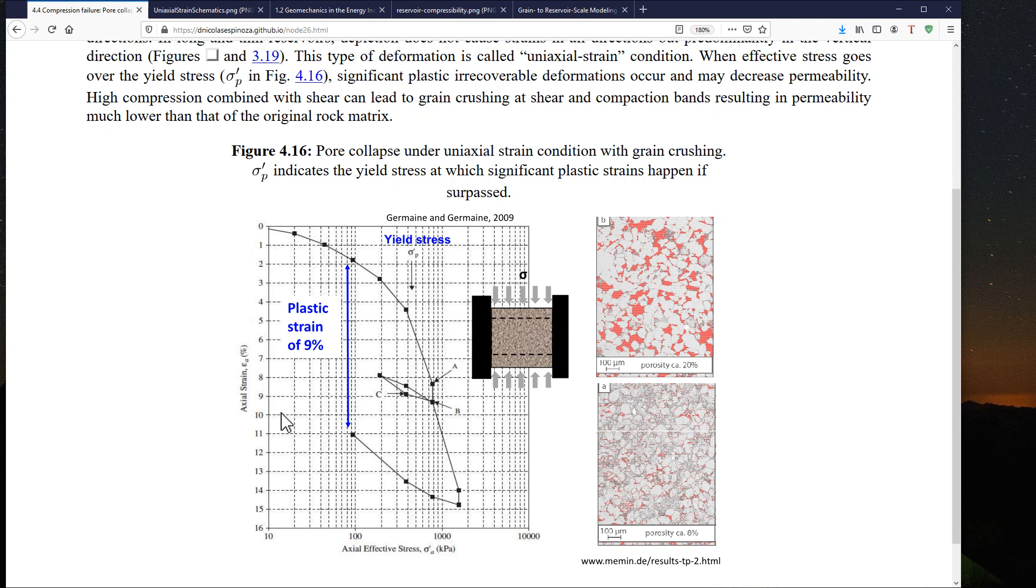Here we have an example of axial strain and axial stress. We can see that as we increase the axial stress, axial strain is going to increase. At some point if I increase the axial stress too much, I'm going to go into inelastic deformations caused by the crushing of the grains that results in a significant decrease in porosity, see this example from 20% to 8%, and that can also result in significant decreases in permeability.